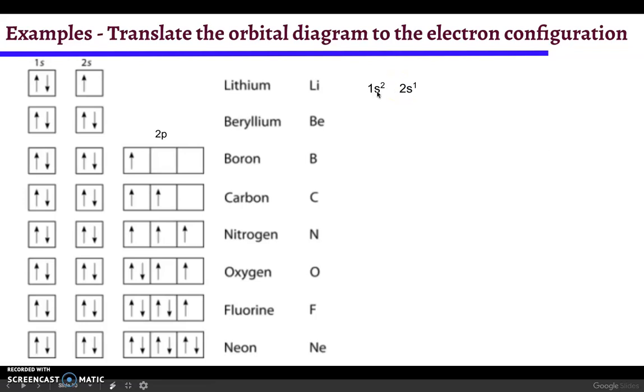How do we write that as an electron configuration? We write 1s because it's the 1s orbital and it has two electrons in there, so we give it a superscript 2. The 2s orbital only has one electron in there, so we write that one as 2s1. Beryllium is very similar. We write that as 1s2 2s2 because this one has two electrons in the 2s orbital.